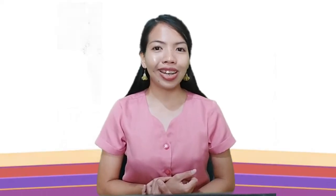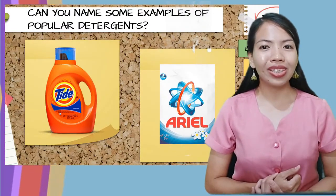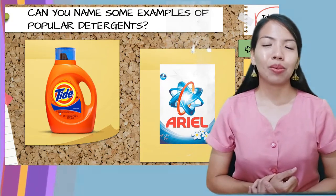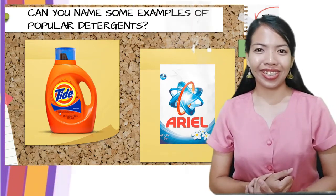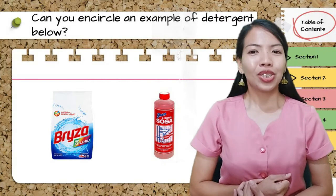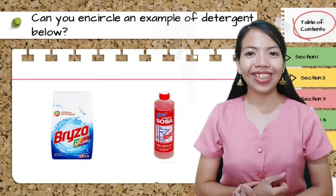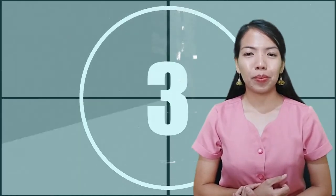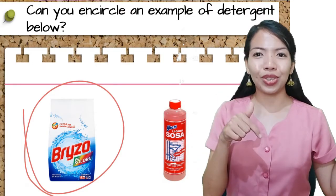Can you help me name some examples of popular detergents? I have here two examples of popular detergents: Tide and Arial powder. I also have two pictures here — can you help me identify which among the two is an example of a detergent? The correct answer is the Bryzo.